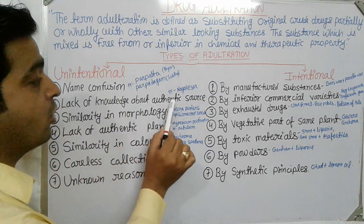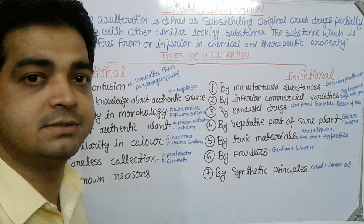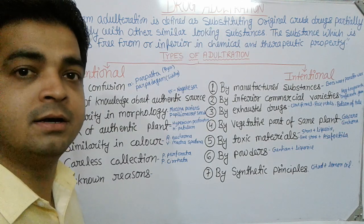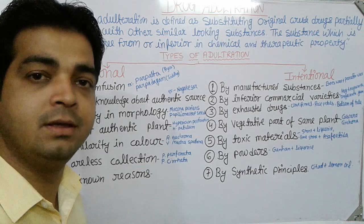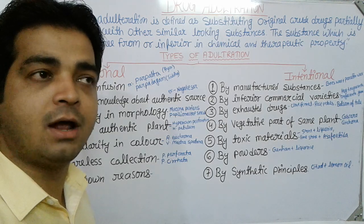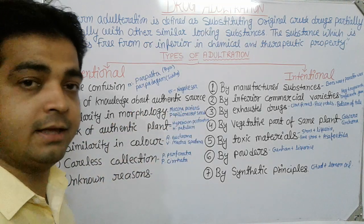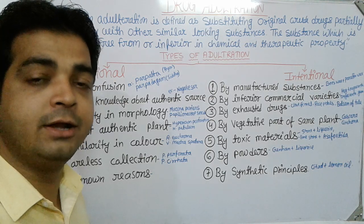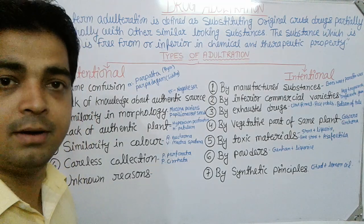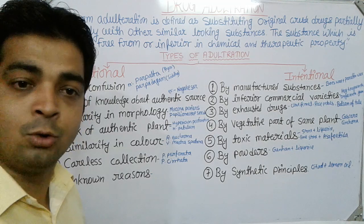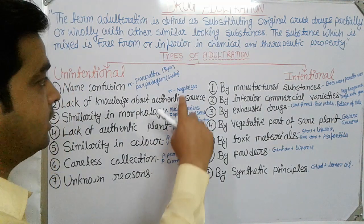The second type is lack of knowledge about the authentic source of the plant. For example, Nagarkesar is available in the western Ghats and Himalayan region, but it is marketed by the same name in other regions too. Similarly, actual sandalwood is available only in specific forests, and Nagpur oranges are specific but other local varieties are sold by the same name.